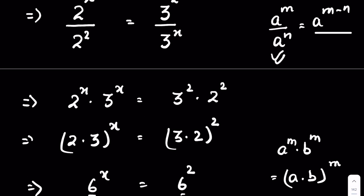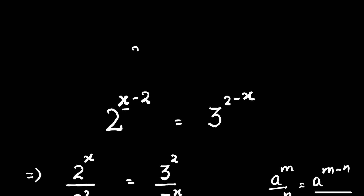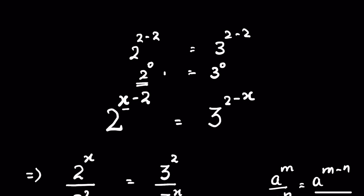We can verify this answer by substituting the value of x. If we put 2 here, this will be 2 raised to the power 2 minus 2, and this side also 3 raised to the power 2 minus 2. So 2 minus 2 gives 2 raised to the power 0, and this side also 3 raised to the power 0. Both equal 1, so LHS is equal to RHS — our answer is verified.